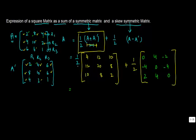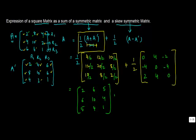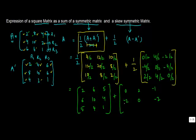Now we take half of both of these matrices, dividing each by 2. For half of (A plus A-transpose): 4 by 2 gives 2, 12 by 2 gives 6, 10 by 2 gives 5, then 6, 10, 4, then 5, 4, 1. For half of (A minus A-transpose): 0 by 2 gives 0, minus 4 by 2 gives minus 2, 2 by 2 gives 1. Then minus 2, 0, minus 2, and 1, 2, 0.